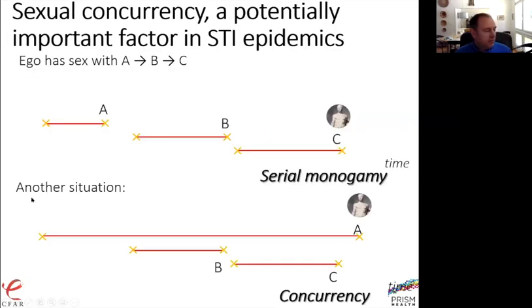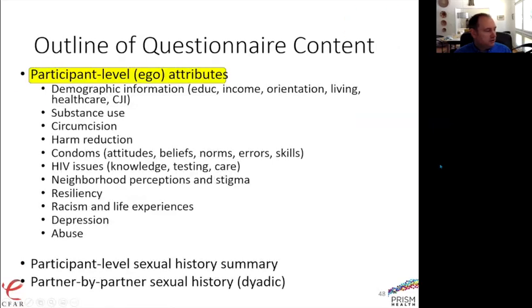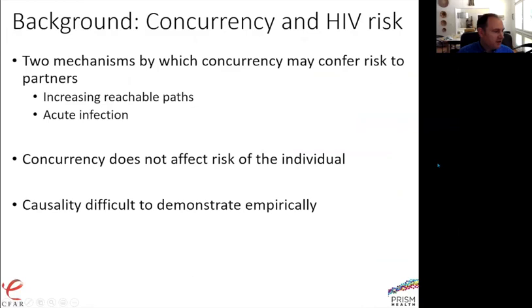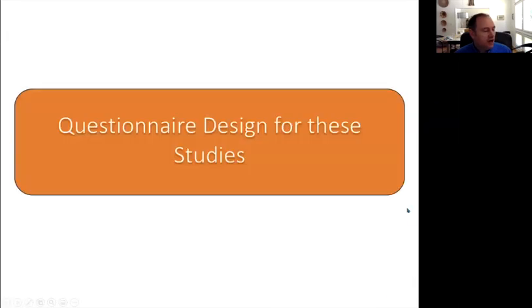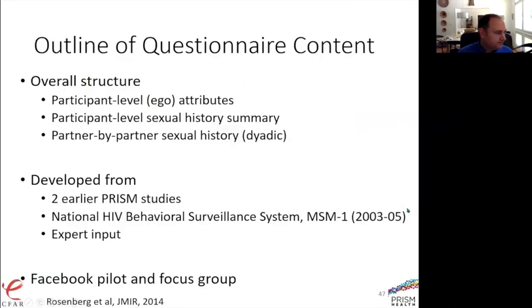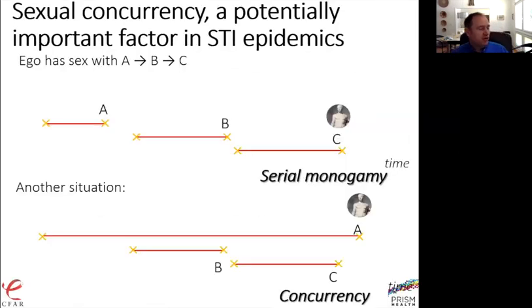In the concurrency scenario, partner A is at risk if partner C is living with HIV because Joe had sex with A, then C, then A again. It matters in our questionnaire design that we understand which of these patterns Joe had — and we're not going to get it by just asking 'how many sex partners did you have in the last three months?'